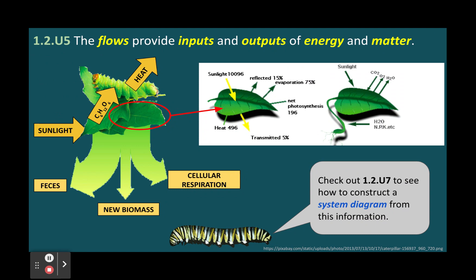In systems diagrams, storages are usually represented as rectangular boxes and flows as arrows, with the direction of each arrow indicating the direction of each flow. The size of the boxes and the arrows may be representative of the sizes of the storages or the flows.